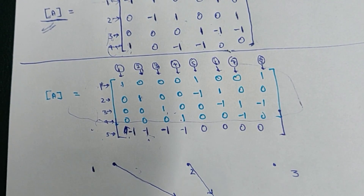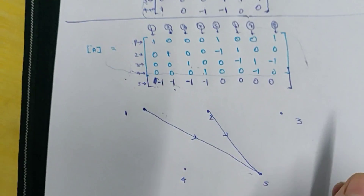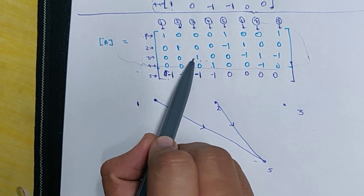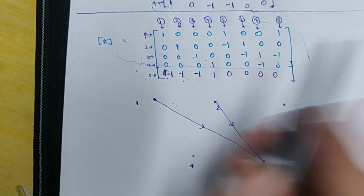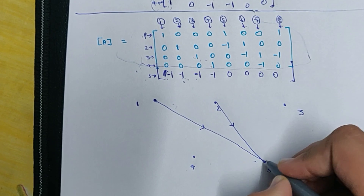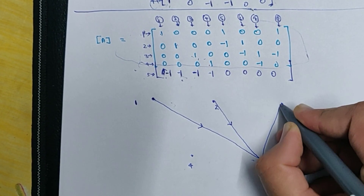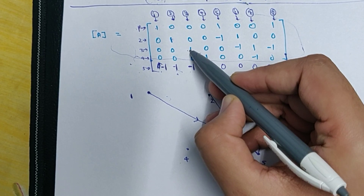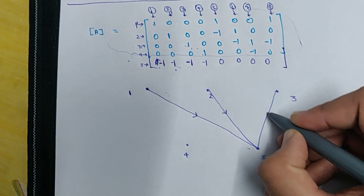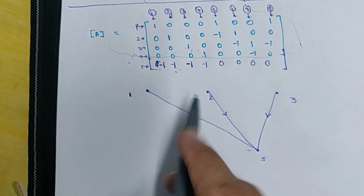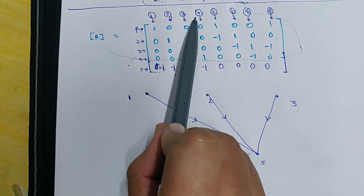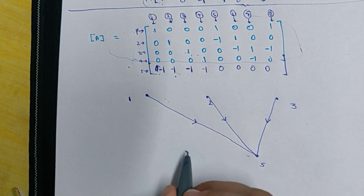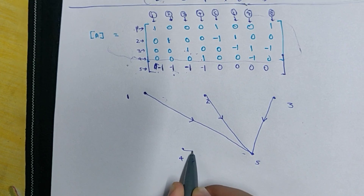For the third branch, it is starting from node 3 to node 5, and the current is flowing from node 3 to node 5. For the fourth branch, it is starting from node 4 to node 5 — so again we draw a branch here and the direction of current is from node 4 to node 5.